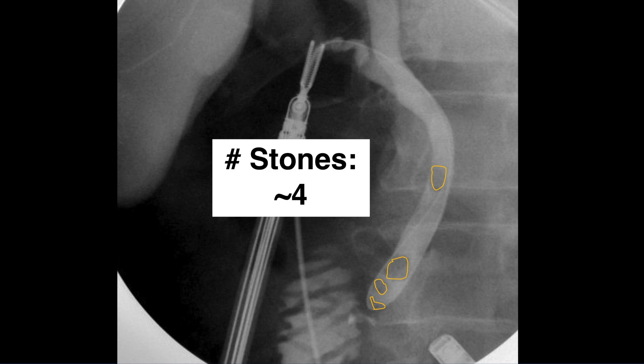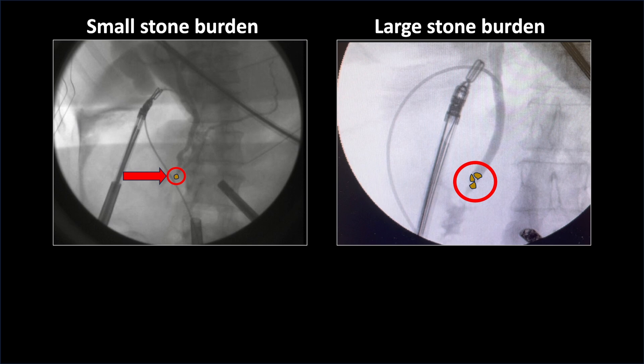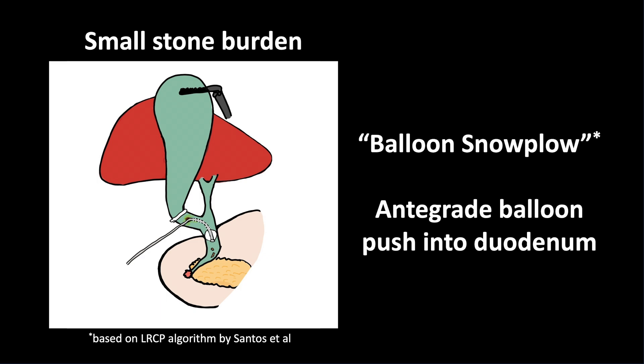For example, on this cholangiogram there appear to be about 4 stones, and the biggest stone appears to be about 6 mm as compared to the robotic trocar, so this would fit into the large stone burden category. Here are two IOCs that represent a small stone burden and a large stone burden. As the algorithm directs, for a small stone burden, first start with a balloon snowplow of stones forward into the duodenum, and for a large stone burden, you will need to do a balloon sphincteroplasty. We will now go over these techniques.